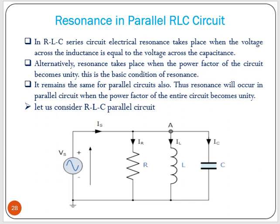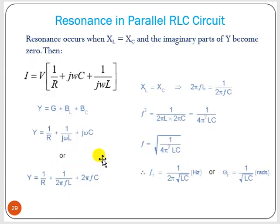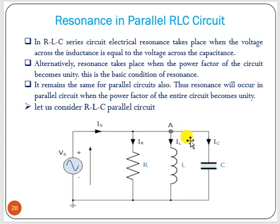Now considering resonance in the RLC parallel circuit. In a series RLC circuit, resonance takes place when voltage across inductance equals voltage across capacitance — alternatively, when the power factor becomes unity. This basic condition also applies to parallel circuits: resonance occurs in a parallel circuit when the power factor of the entire circuit becomes unity.